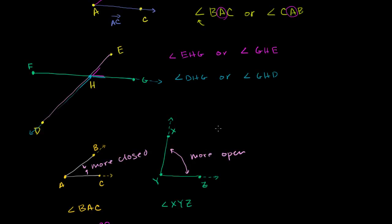Now that we know what an angle is, let's think about how we can measure them. We already hinted at one way in the last video, where angle XYZ seems more open than angle BAC, so the measure of angle XYZ should be larger. That is exactly the way we think about the measures of angles. In this video, I want to come up with an exact way to measure an angle.